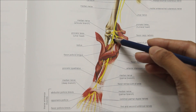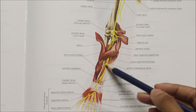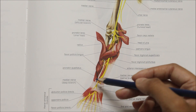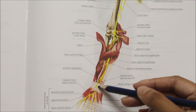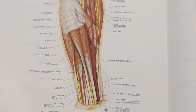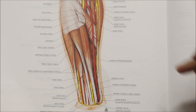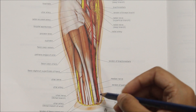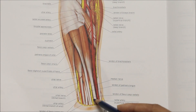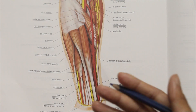The median nerve enters the forearm to lie between the flexor digitorum superficialis and the flexor digitorum profundus. It reaches down towards the region of the wrist where it lies deep and lateral to the palmaris longus tendon. It passes deep to the flexor retinaculum through the carpal tunnel to enter the palm, and soon terminates by dividing into muscular and cutaneous branches.